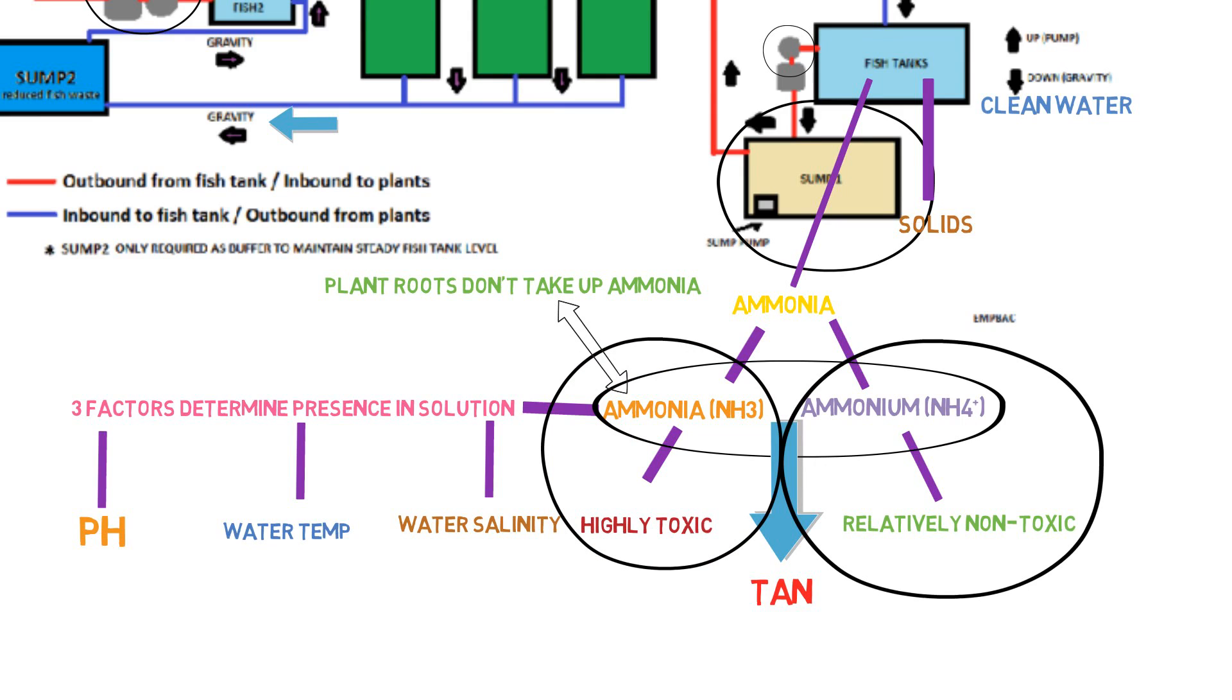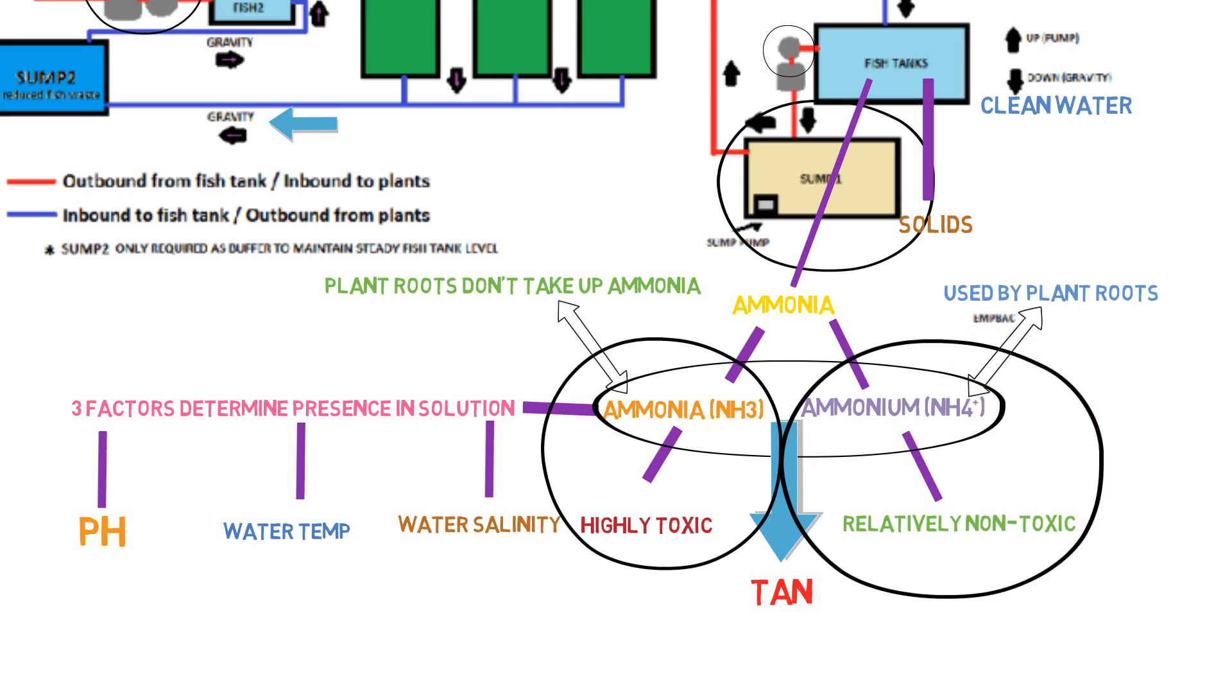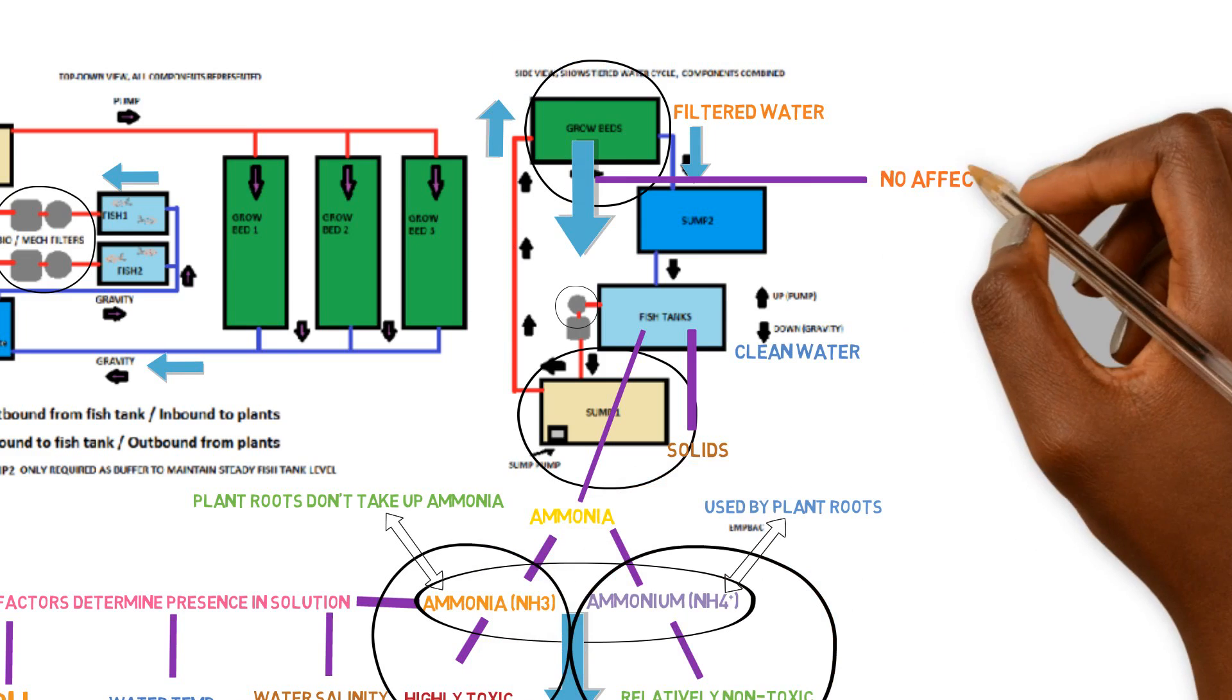The only way ammonia, gaseous ammonia is being supplied to plants is through atmospheric deposition or a foliar spray and is being absorbed through the stomata. That's the only way plants are taking up gaseous ammonia, not through the roots. What they do take up is ammonium, the non-toxic form of the ammonia. So passing it through the grow bed, this ammonia, the highly toxic ammonia, isn't going to accomplish anything.